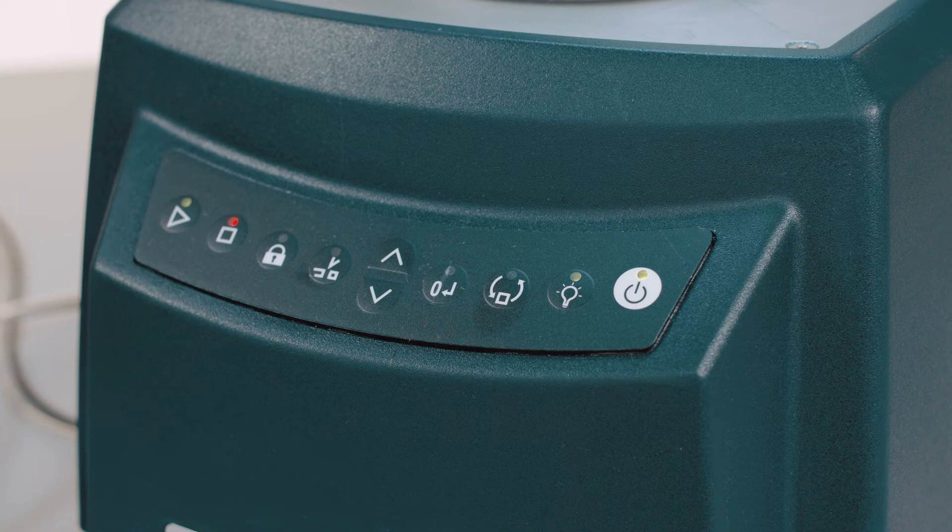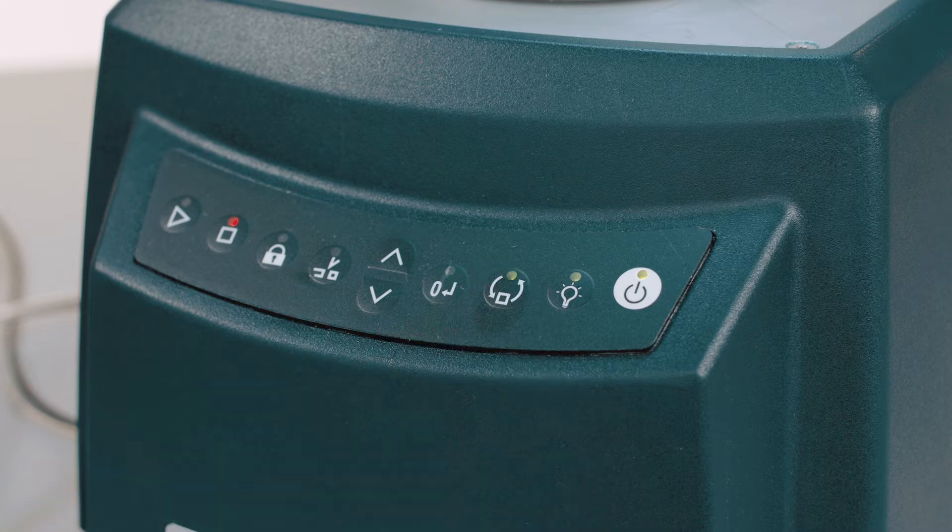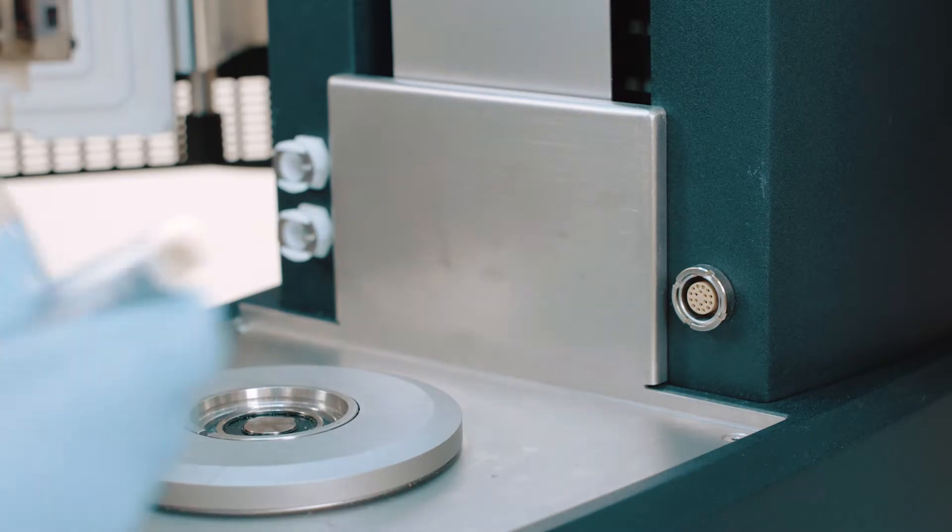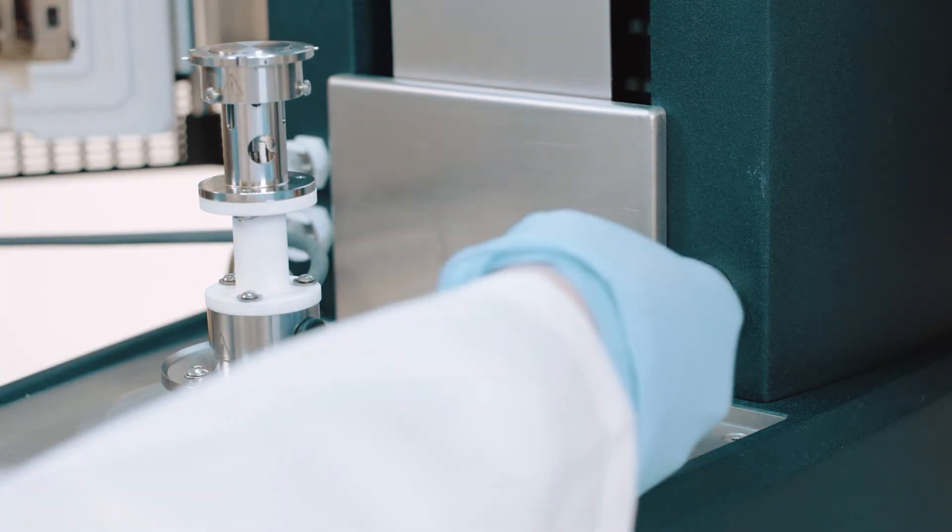To install the Auto Trim Accessory onto the Discovery Hybrid Rheometer, press the release button and load the pedestal, then plug in the accessory cable.